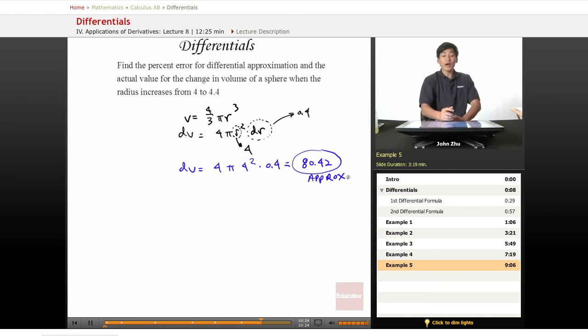But we're looking for the percent error for the approximation from the actual value. So let's find the actual value. The actual value, original volume, is going to equal 4/3 pi times 4 cubed, which equals 268.08 if we carry out the arithmetic.